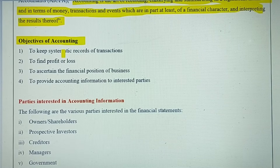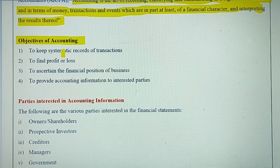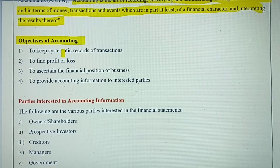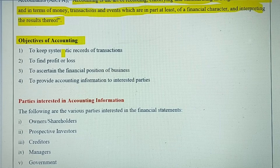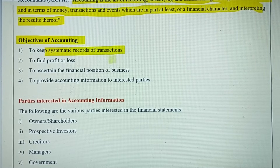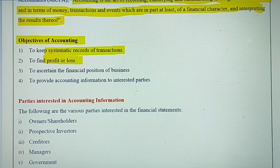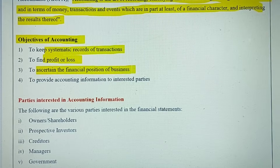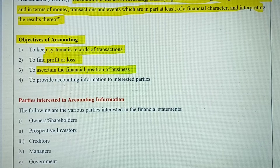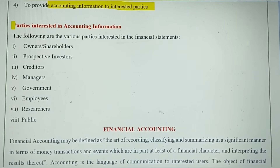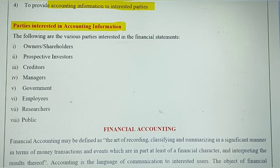In this video I will highlight only the main points such as the objectives of accounting — you need to buy study materials for detailed explanations. The main objectives of accounting are: to keep systematic records of transactions; to find the profit and loss the firm has incurred during the year; to ascertain the financial position of the business — that means finding the amount of assets and liabilities; and to provide accounting information to interested parties.